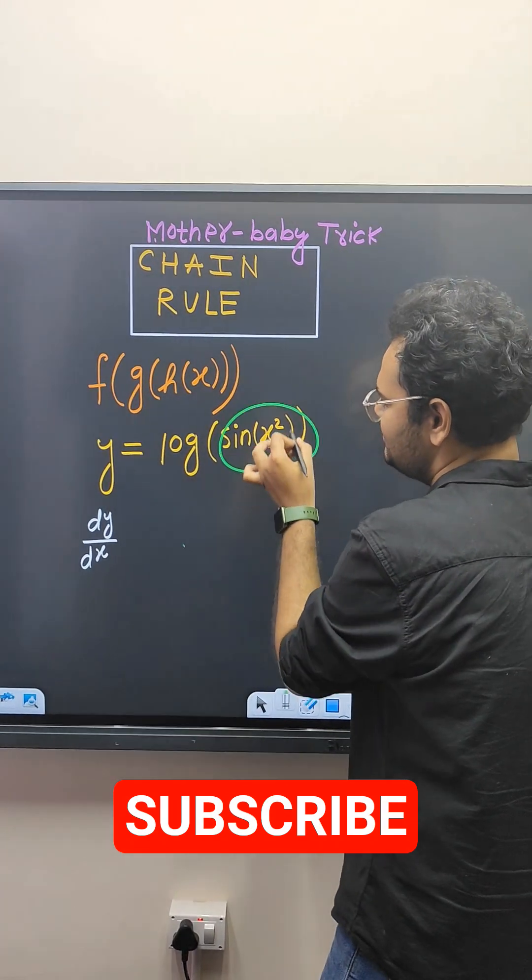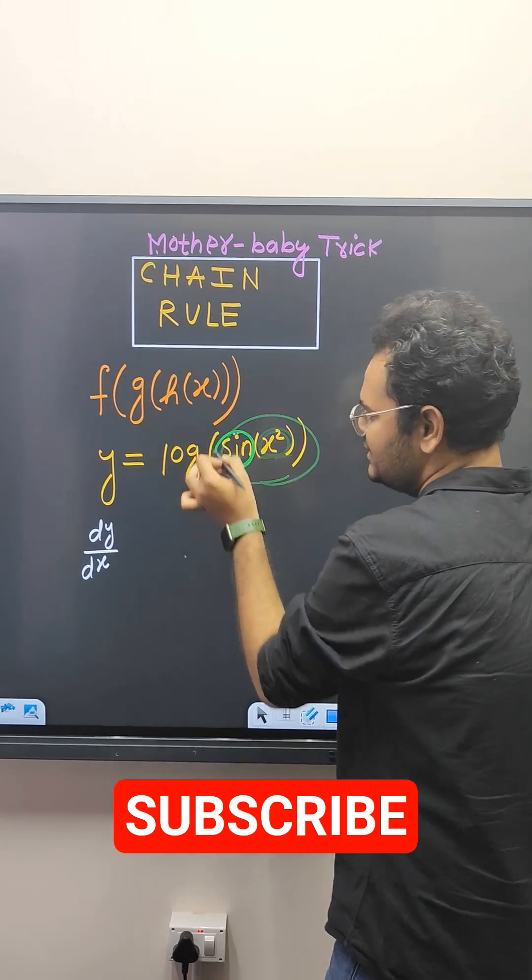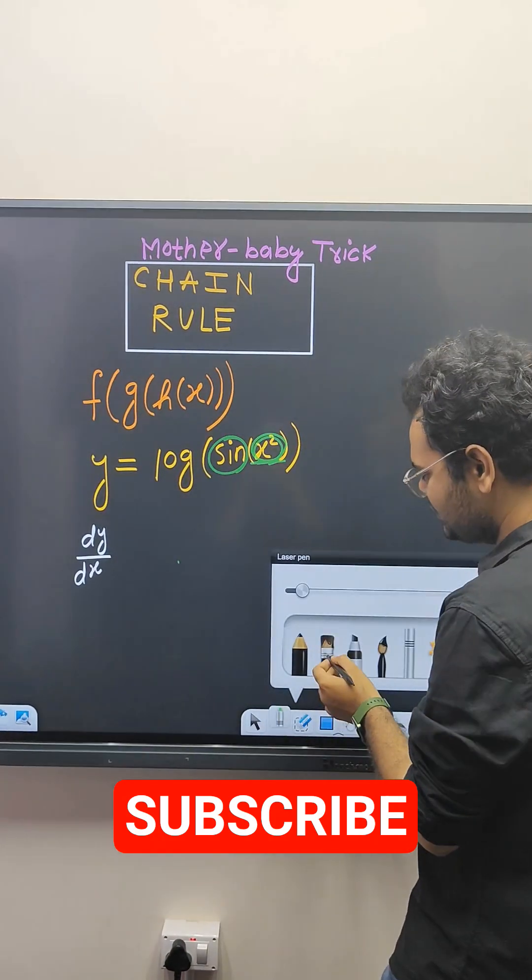Similarly, x square is baby and sine is its mother. Then, next question comes,